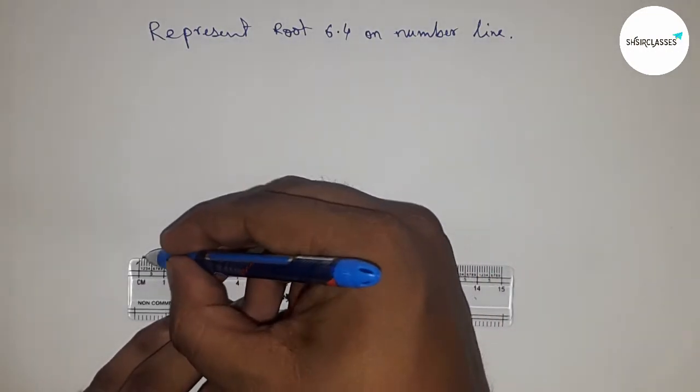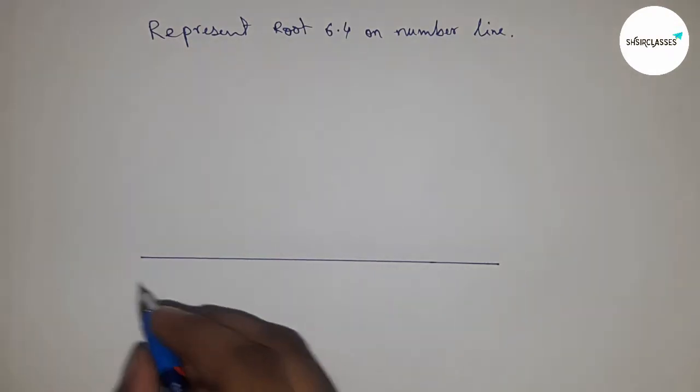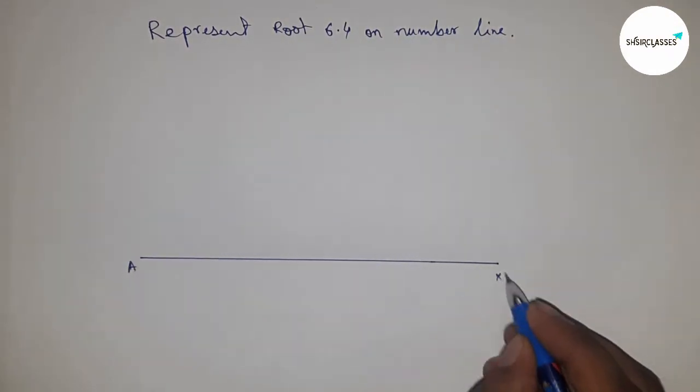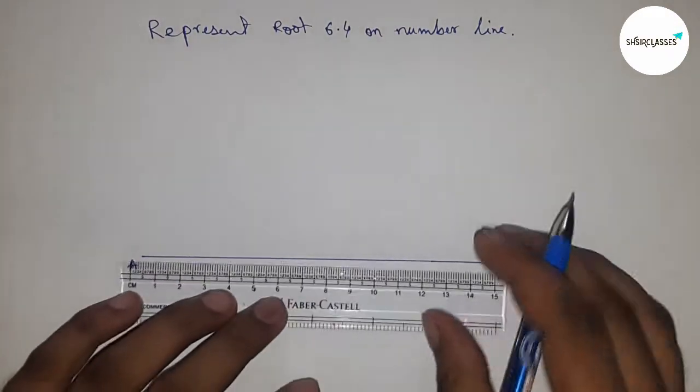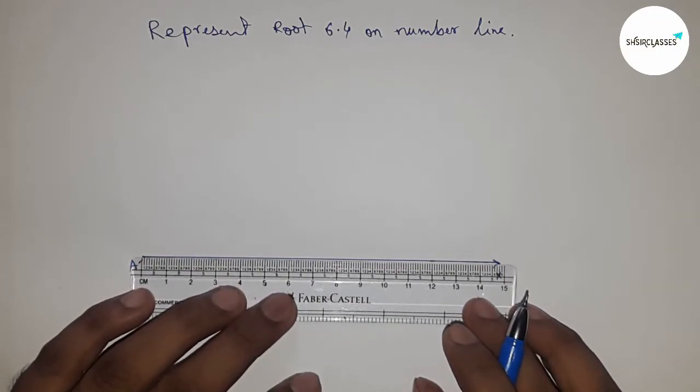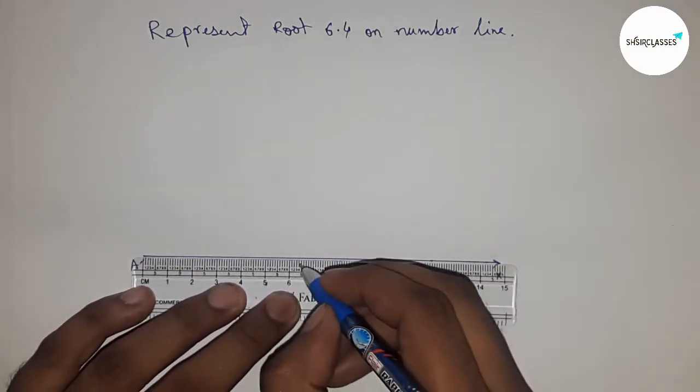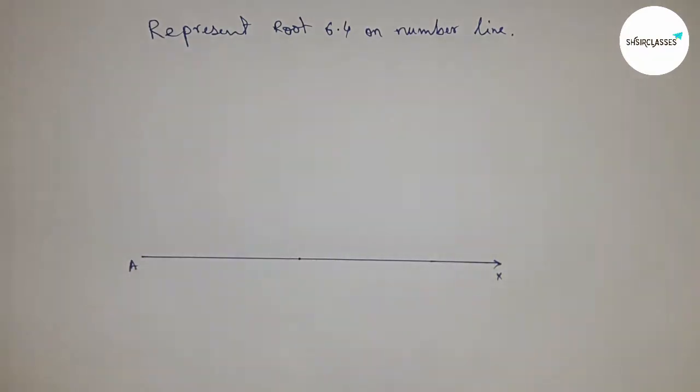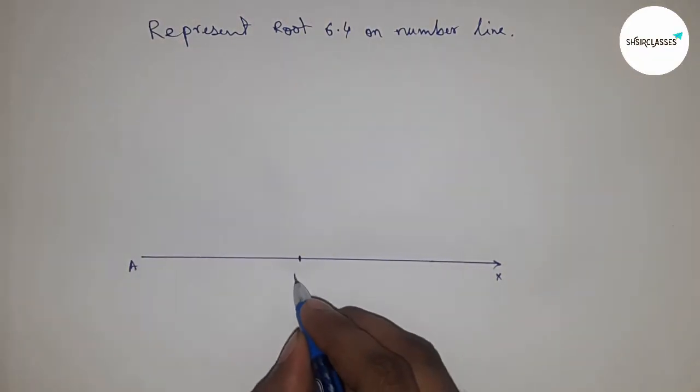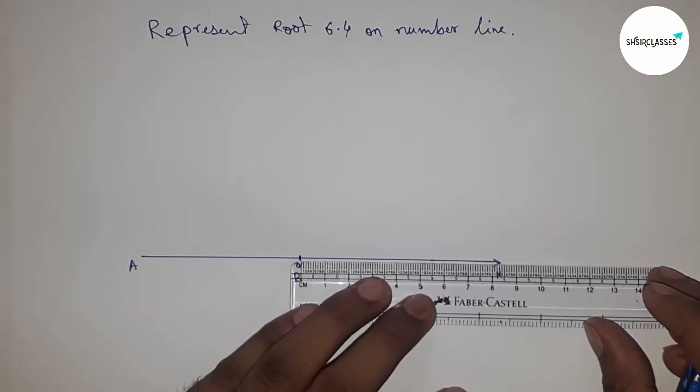First of all, I'm drawing a line of array length here, and this is the X-axis line. Next, taking a length of 6.4 by scale, so this is 6.4 centimeters. This is point B, and this is the starting number zero.